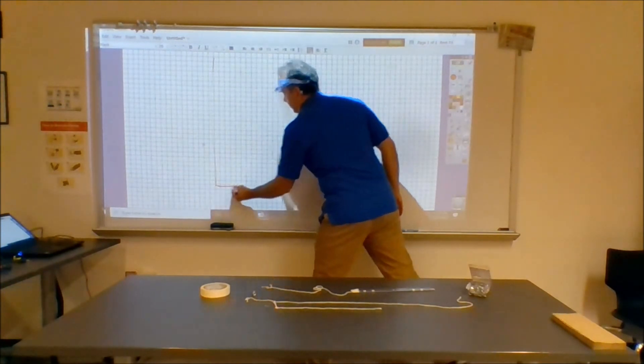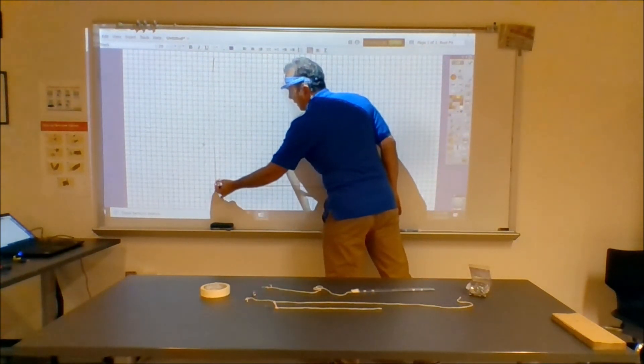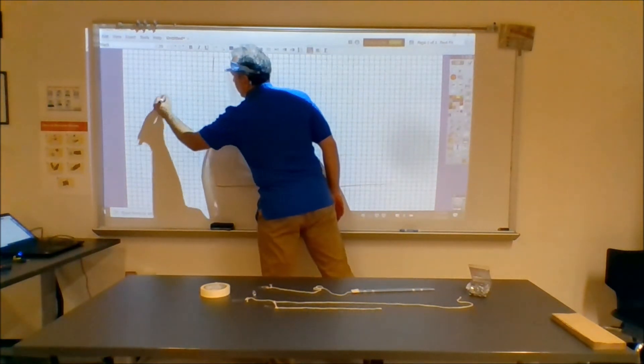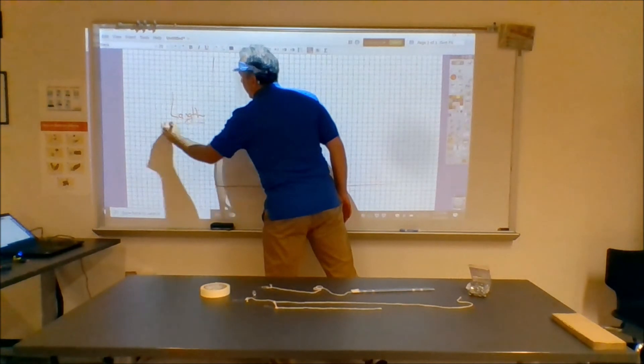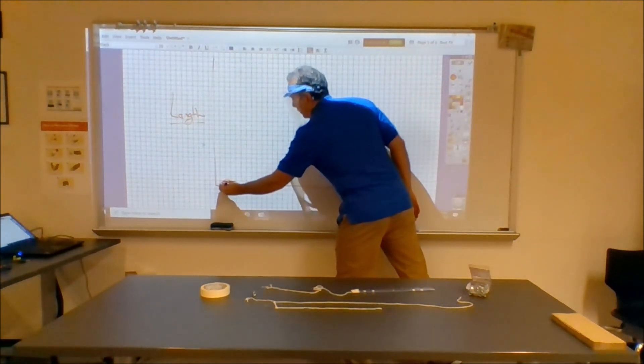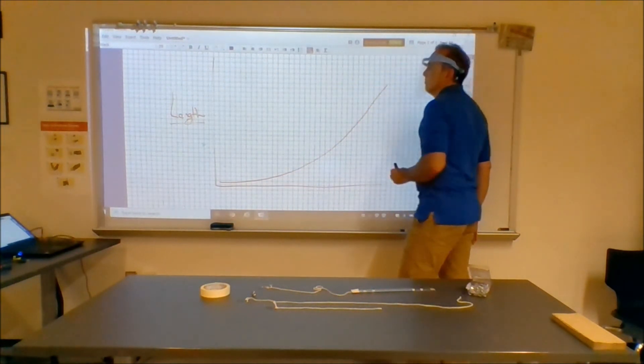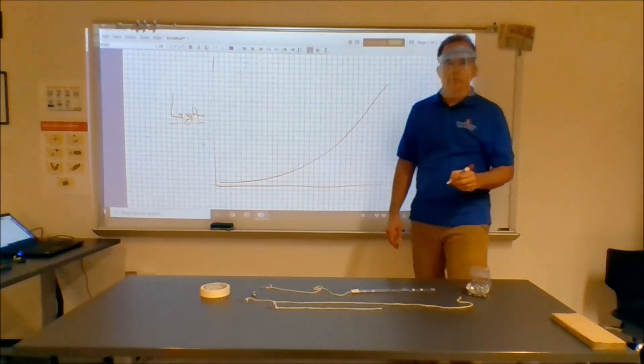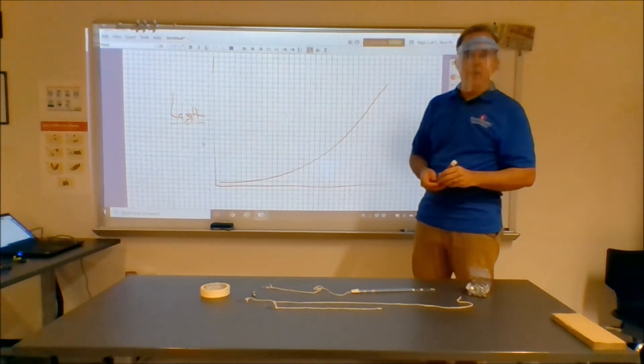But if you take those groups and you make a graph out of it, what you will see is that if this is the length, and then the number of times it swings at the bottom, what you'll see is your graph make a very nice curve. But only when the entire class's data is on there.